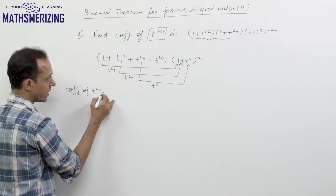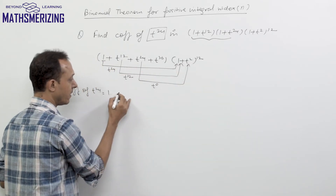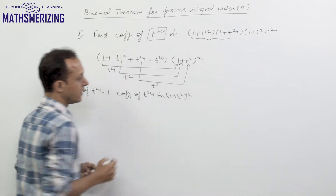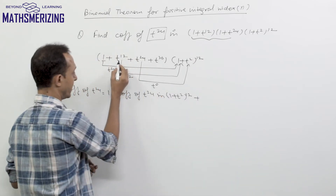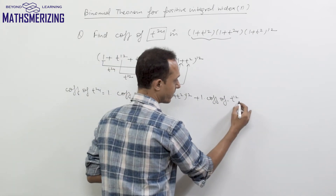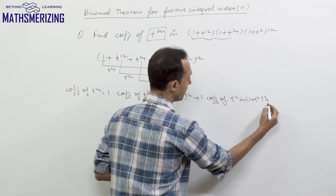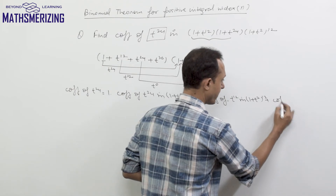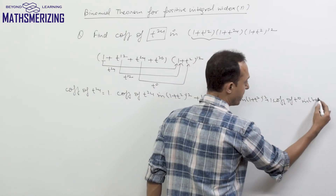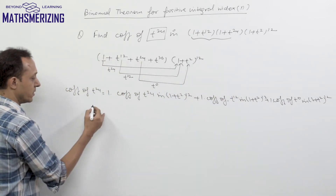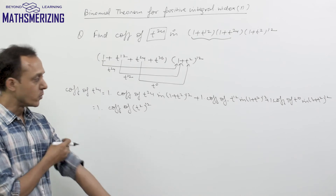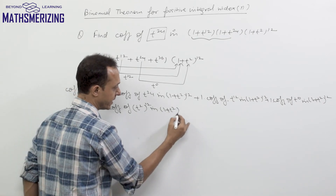So the coefficient of t²⁴ will be: the coefficient of t²⁴ in (1 + t²)¹², plus 1 times the coefficient of t¹² in (1 + t²)¹², plus 1 times the coefficient of t⁰ in (1 + t²)¹². I can rewrite t²⁴ as (t²)¹², t¹² as (t²)⁶, and t⁰ as (t²)⁰ in the expansion (1 + t²)¹².